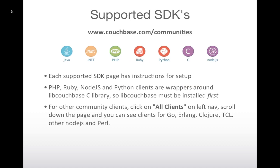We support Java, .NET, PHP, Ruby, Python, C, and Node.js. We also support some community clients: Go, Erlang, Clojure, Tcl, and there are some other Node.js ones and Perl. On the couchbase.com/community site, if you click on 'all clients' on the left, you can scroll down and see clients for those languages.